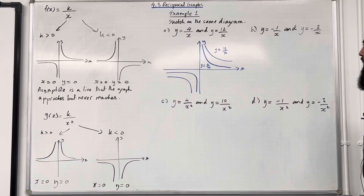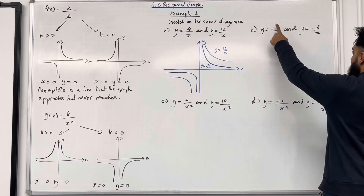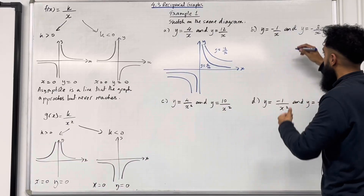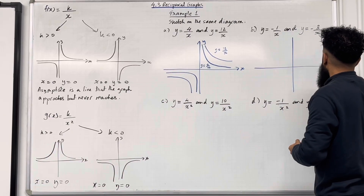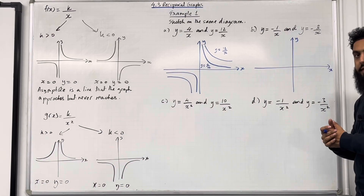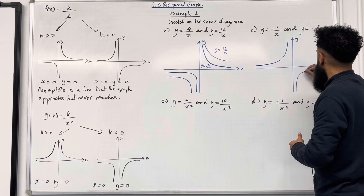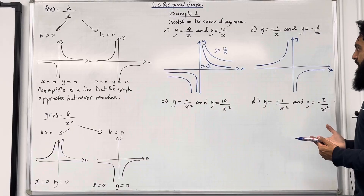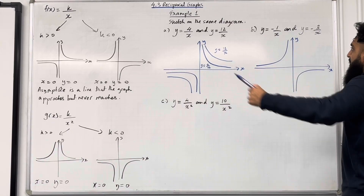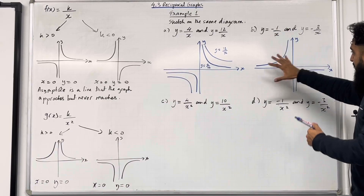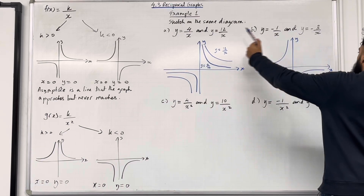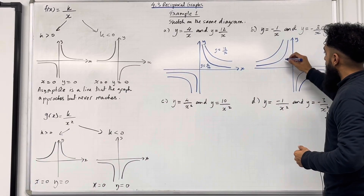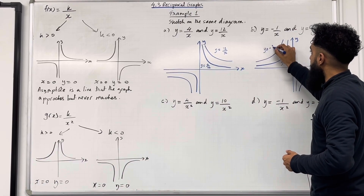Let's move on to part B: y equal minus 1 over x and y equal minus 3 over x. The numerator is negative 1, so the graph will take on the flipped shape. Here's my coordinate grid. Starting with y equal minus 1 over x — here's the shape of the graph. For y equal minus 3 over x, notice that minus 3 is smaller than minus 1, so the curve will be more further away from the origin. Here are both graphs sketched: y equal minus 1 over x and y equal minus 3 over x.